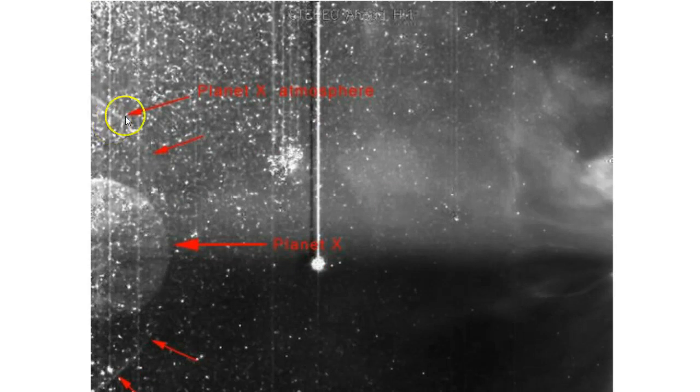I'm going to trace it here with the mouse. You can see the circle around the circle of the planet, of its atmosphere, where all the arrows are pointing there.